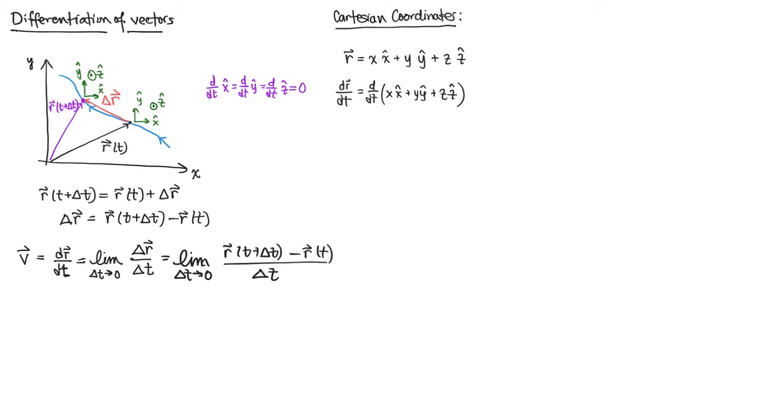So if we'd like, we can think of distributing this derivative through these terms, and really, we're going to have a product rule for each. We have the time derivative of x times x-hat plus the same for y times y-hat and z times z-hat. So if we were to be really explicit about this, we would have dx/dt in the x-hat direction, plus x d(x-hat)/dt, plus the same for y and same for z.